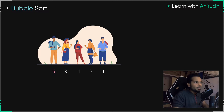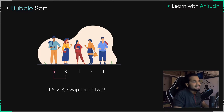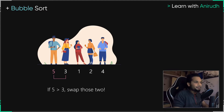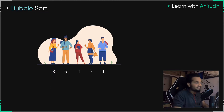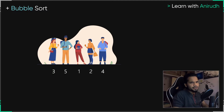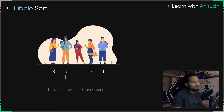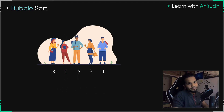We compare 5 with 3 — 5 is greater than 3, so we swap. Then 5 moves to compare with 1 — 5 is greater than 1, so they swap again: 1 moves left, 5 moves right. Then 5 compares with 2 — 5 is greater than 2, so they swap. 5 is still not in its final place, so there's one more comparison with 4. 5 says it's bigger than 4 and moves to its final place — they swap.